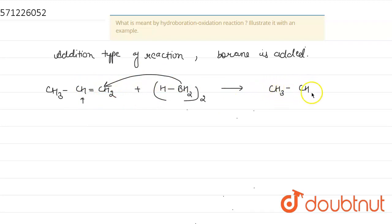So, formation of CH3-CH2-CH2-BH2 occurs. In this group, we again add one more propene molecule. We will add propene molecules until all the hydrogens are substituted by the alkene groups.